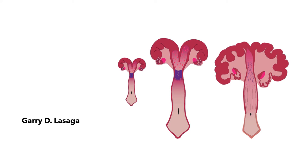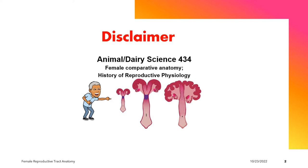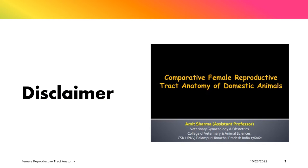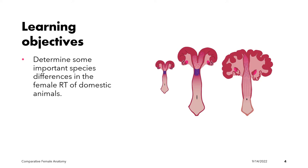This presentation covers the comparative anatomy of domestic animals, particularly the female reproductive tract, focusing on the uterus. References include the presentation by Dr. John Parish, a professor at the University of Wisconsin, on comparative female reproductive anatomy, and the presentation on comparative female reproductive tract anatomy by Dr. Amit Sharma of India.